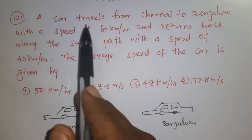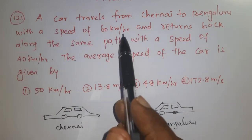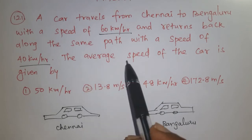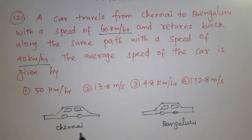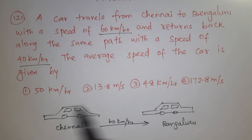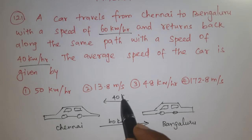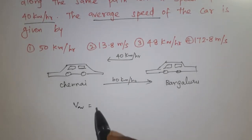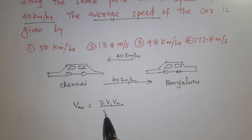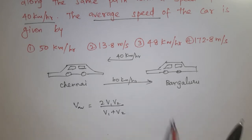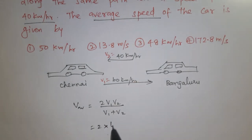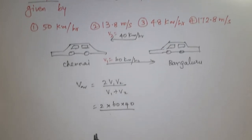Question number 121. A car travels from Chennai to Bangalore with a speed of 60 km per hour and returns back along the same path with a speed of 40 km per hour. What is the average speed? The average speed formula is equal to 2×V1×V2 divided by V1 plus V2. So, V1 is 60 km/h and V2 is 40 km/h.